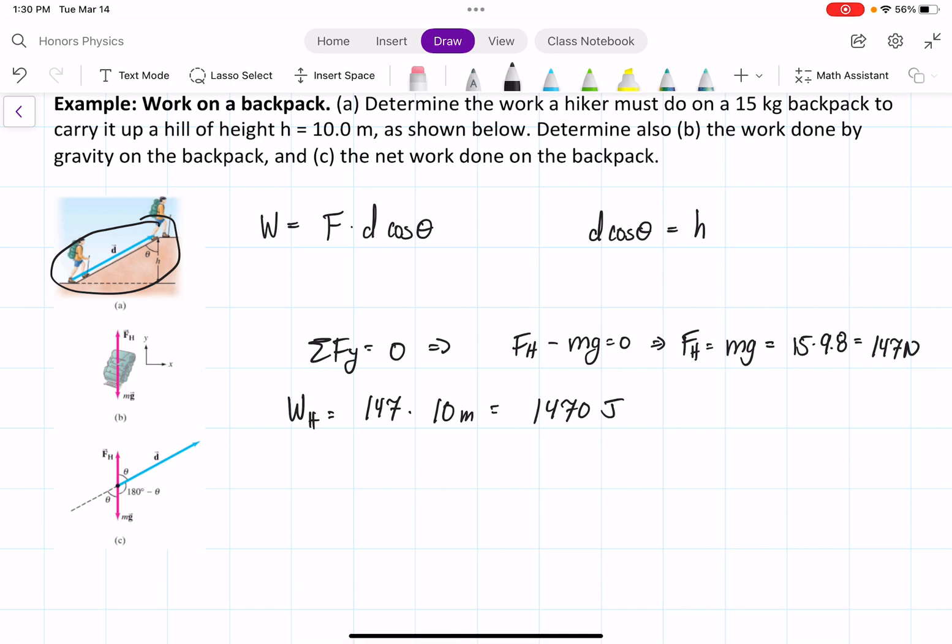It says now to determine also the work done by gravity on the backpack. So if we do that, we have work due to gravity equal to force times d cosine theta, but in this case we have theta as equal to 180 minus theta. So we have mg, which is going to be 147,